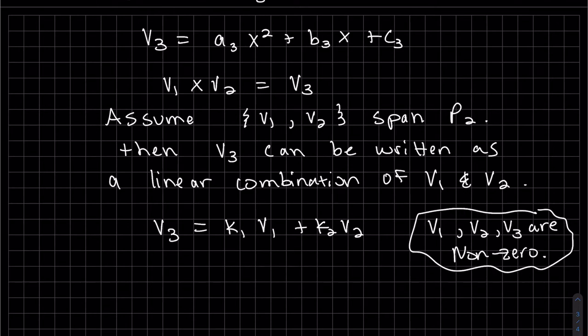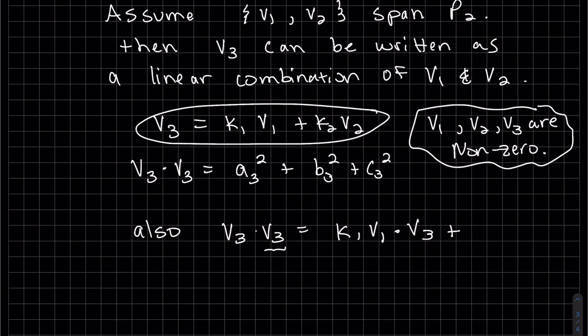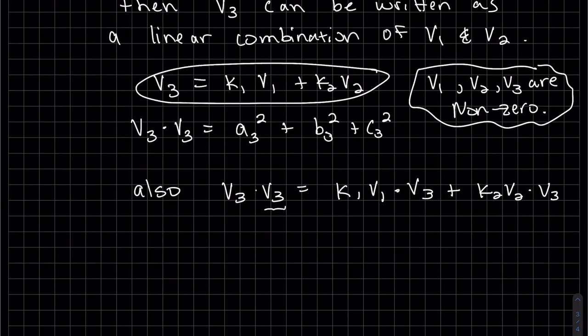Now what I'm going to do is take v3 and dot product it with itself. That's a3 squared, my coefficient squared, b3 squared. Also, looking at this and dot producting it with itself, with v3, is k1 v1 dot v3—that's that one—and then my second one is k2 v2 dot v3.